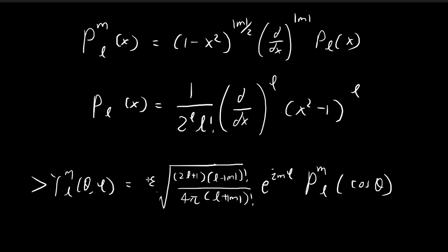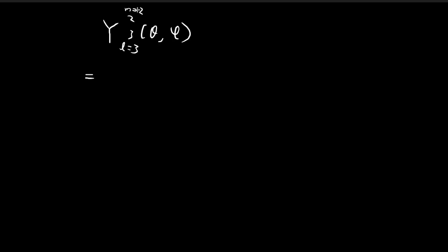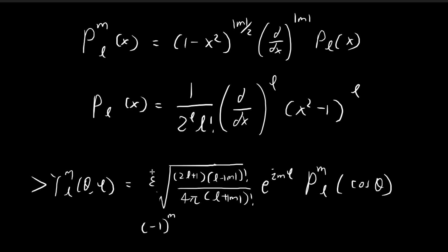We start off with epsilon. Epsilon is a special term equal to negative 1 to the power of m when m is larger than 0. For the case where m is equal to 2, epsilon is just equal to negative 1 squared, which is just equal to 1.